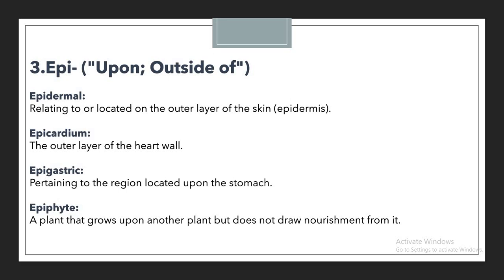The next prefix is EPI. EPI is mainly used to showcase something as upon or outside. A couple of examples: epidermal means relating to or located on the outer layer of the skin, which is the epidermis. Whenever we use a prefix to showcase something as the outer layer of the skin, we use EPI to denote something as upon or outer.